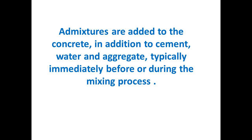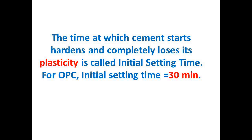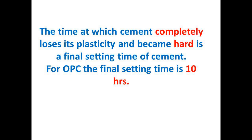What are the initial and final setting times of concrete? The time at which cement starts to harden and completely loses its plasticity is called the initial setting time. For ordinary Portland cement, the initial setting time is 30 minutes. The time at which cement completely loses its plasticity and becomes hard is the final setting time. For OPC, the final setting time is 10 hours.